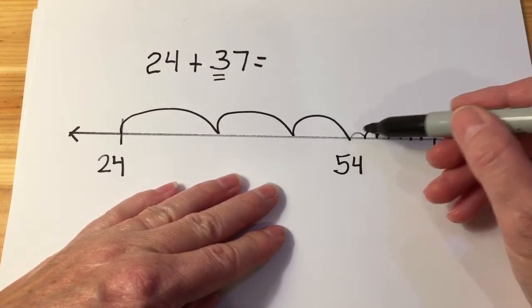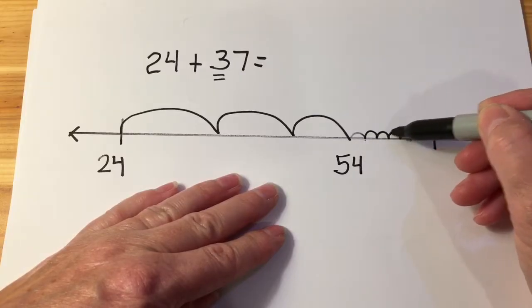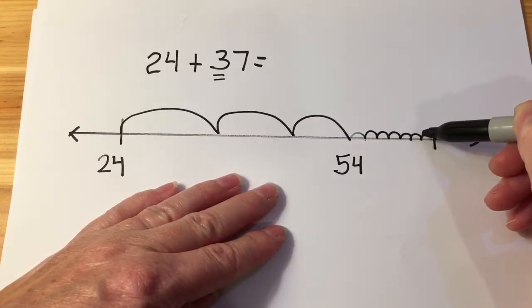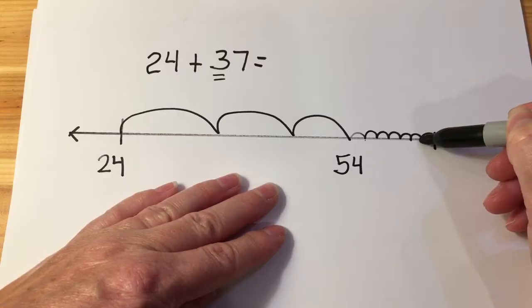For young children, they might be here at 54, 55, 56, 57, 58, 59, 60, 61.